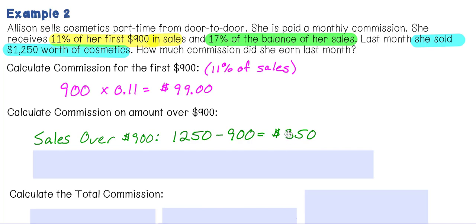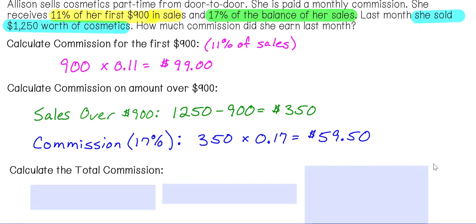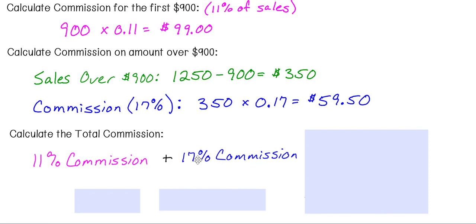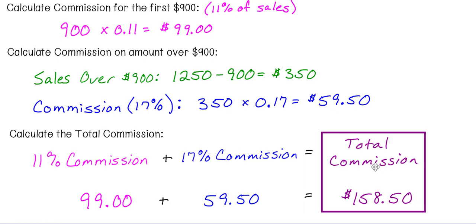We take the $350 in sales over $900 and multiply it times the commission rate for the balance, which is 17%. So $350 times 0.17 gives $59.50 for the amount sold over $900. To get her total commission, we add the 11% commission and the 17% commission: $99 plus $59.50. The total commission Allison earned is $158.50.